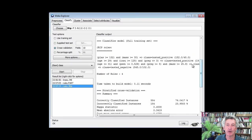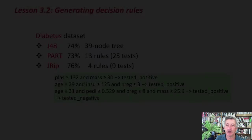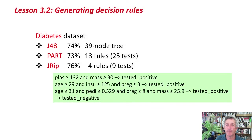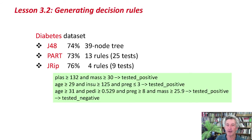Ripper does really well — 76% accuracy, and it has only 4 rules. Amazing! Ripper starts out by taking the majority class — in this case tested negative — and leaving that to the end, so it only produces rules for the other classes and then leaves the majority class as a default. Tested positive is the smaller class and tested negative is the larger class. These are the rules we come up with: only 4 rules, 9 tests, and best performance of all. That's pretty amazing.